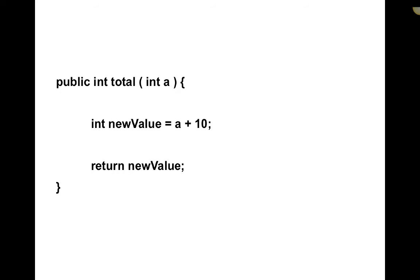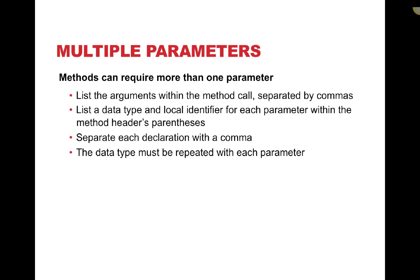It's just like declaring and initializing a variable in our main program, just done a little differently because we're not actually initializing it when we create the method — we initialize it whenever the method is called and it's passed in. Methods can have multiple parameters listed within the parentheses, separated by commas. We have a data type and a local identifier or local variable name for each parameter. If multiple parameters have the same data type, the data type must be repeated with the temporary name used within the method.